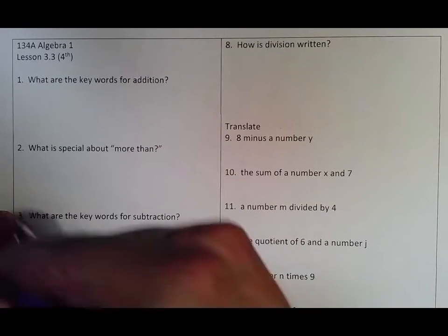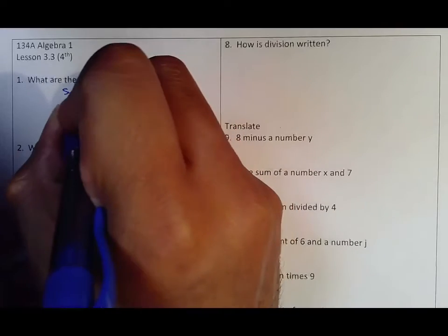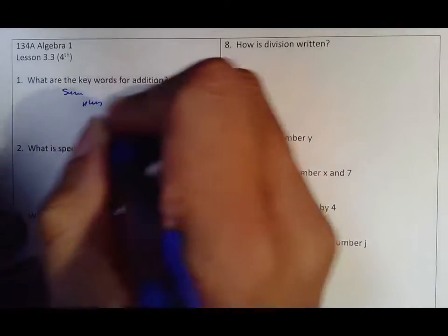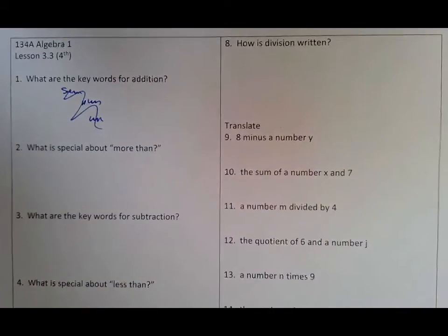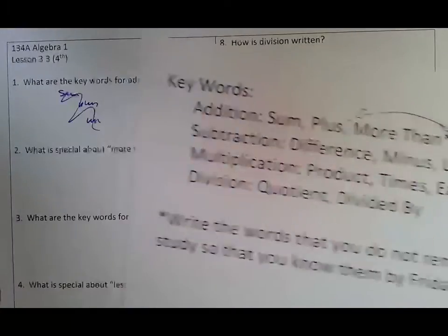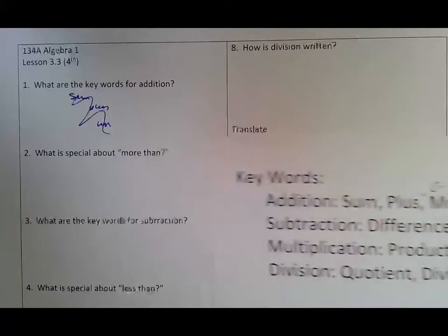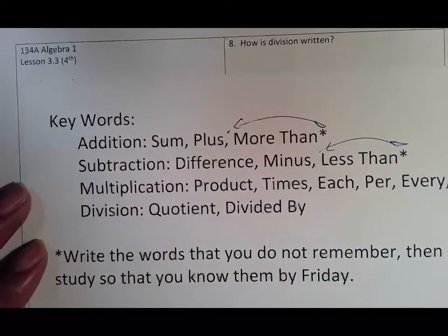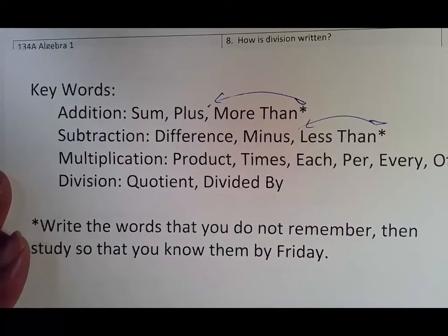The keywords for addition again: sum, plus, more than. Keywords for subtraction: difference, minus, less than. Multiplication is product, times, each, per, every, of. Division is quotient and divided by.